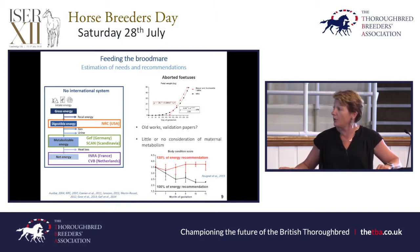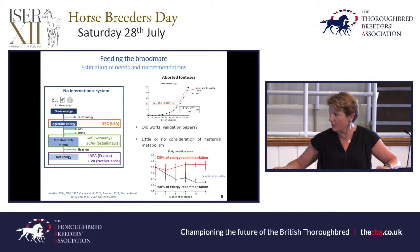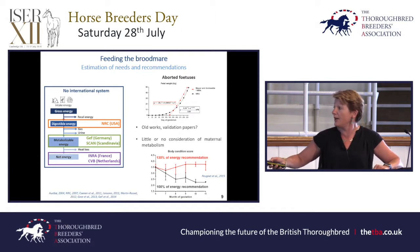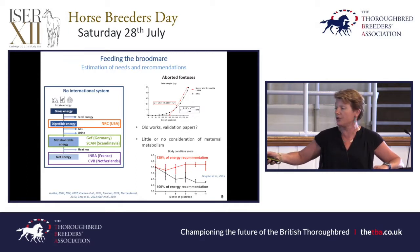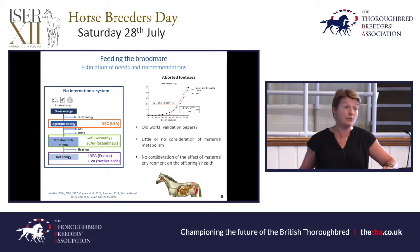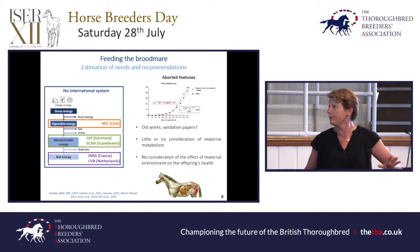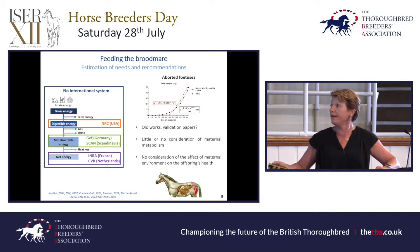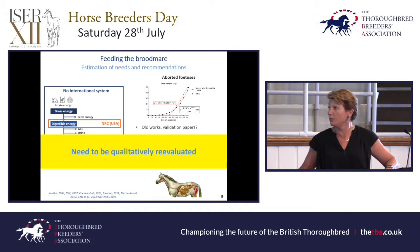This is an example from our work where we used INRA recommendations. Here is the body condition score: when we were at the optimal 3.5 at six months of gestation and fed 100% of energy recommendations, the body condition score went down. We had to feed up to 130% of the recommendations to keep body condition. So we don't know what is really the right thing to do, and at the moment there's very little work on the effect of what we feed these mares on their offspring's health.